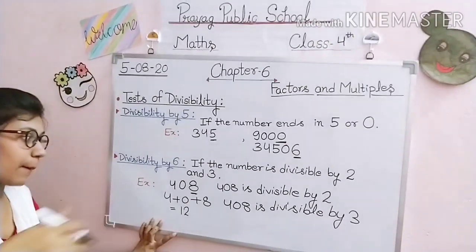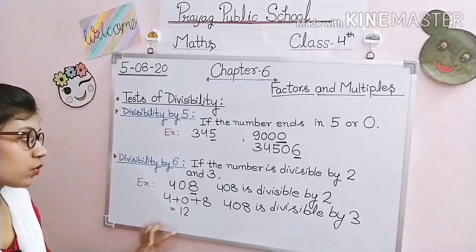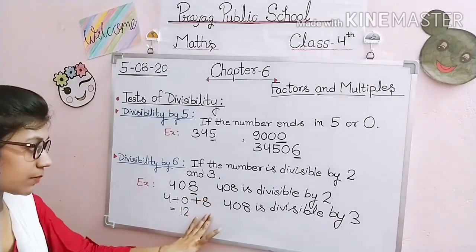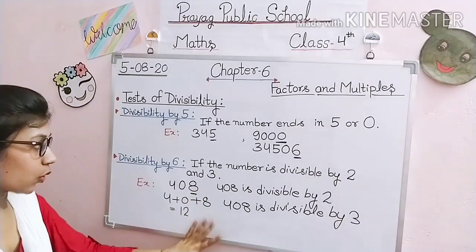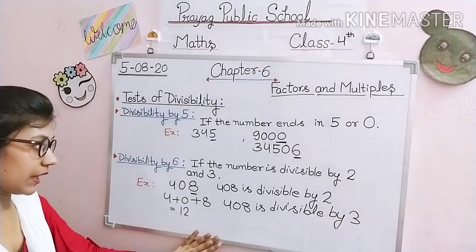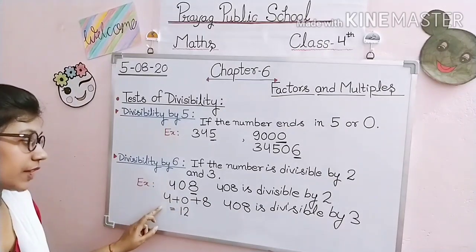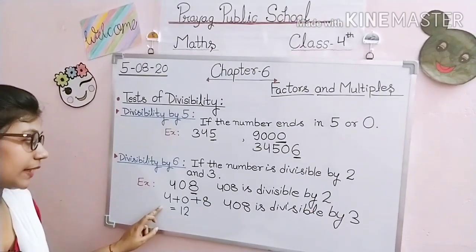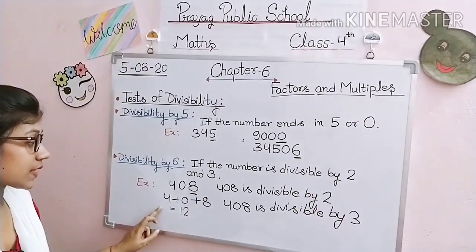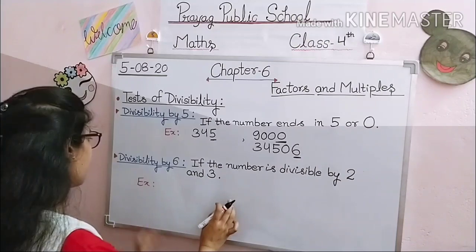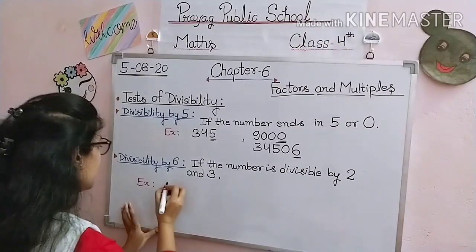If any number is divisible by 2 but not divisible by 3, then it will not be divisible by 6. The given number must be divisible by both 2 and 3, only then it is divisible by 6. Let's take one more example.